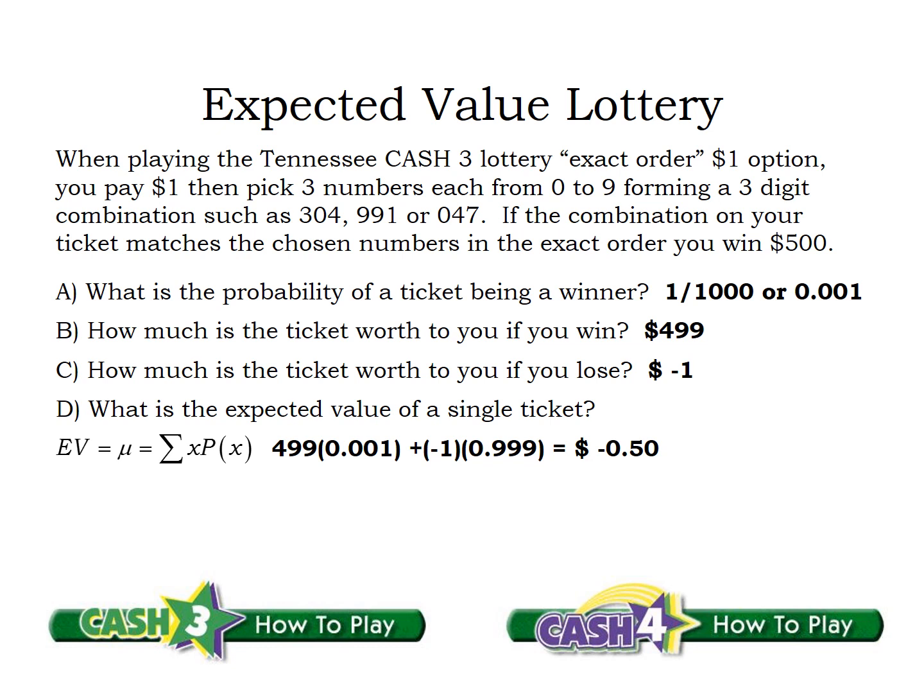Notice this takes into account both the chance of winning $499 and the chance of losing a dollar, and accounts for the fact that $499 rarely happens while negative $1 happens most of the time. So if you were to buy one lottery ticket drawing after drawing, week after week, day after day, hundreds of thousands of different drawings — on average, you would lose 50 cents per ticket. You'll never actually lose 50 cents on one ticket; you can only lose a dollar or gain $499, but on average it works out to losing 50 cents a ticket.